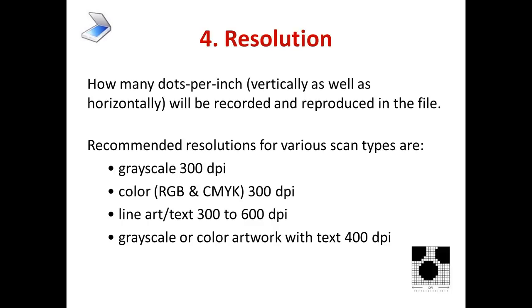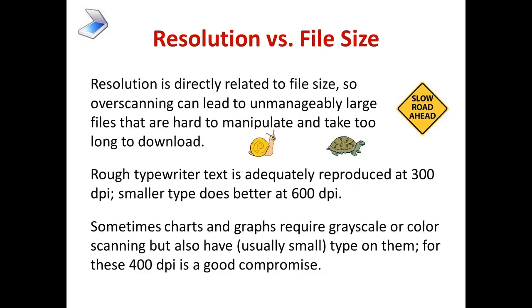The fourth thing you should control with your scanner software is the resolution — how many dots per inch, vertically as well as horizontally, will be recorded and reproduced in the file. I recommend 300 DPI for grayscale and for color. For line art and text, 300 at the low end and 600 at the high end. Sometimes you get things that are a mixture — grayscale with text on it — and for those I find 400 DPI is a good compromise. The other side of resolution is file size. Over-scanning or scanning at too high a resolution can lead to unmanageably large files that are hard to manipulate and take too long to download. Rough typewriter-style text is usually adequately reproduced at 300 DPI, but smaller and curvier type does much better at 600 DPI.